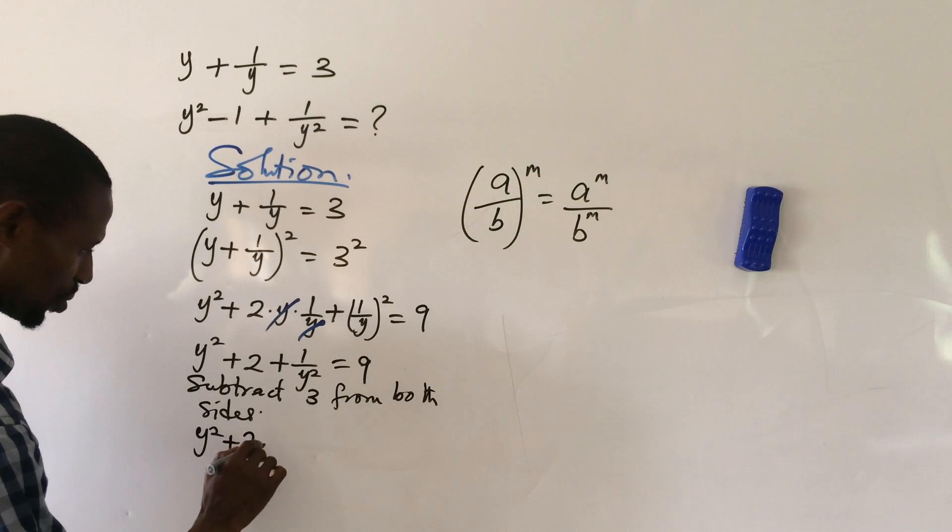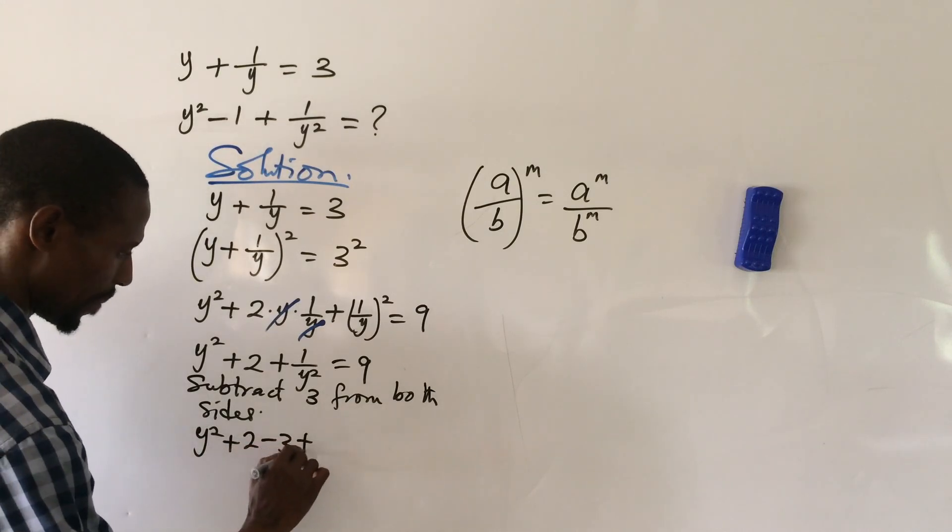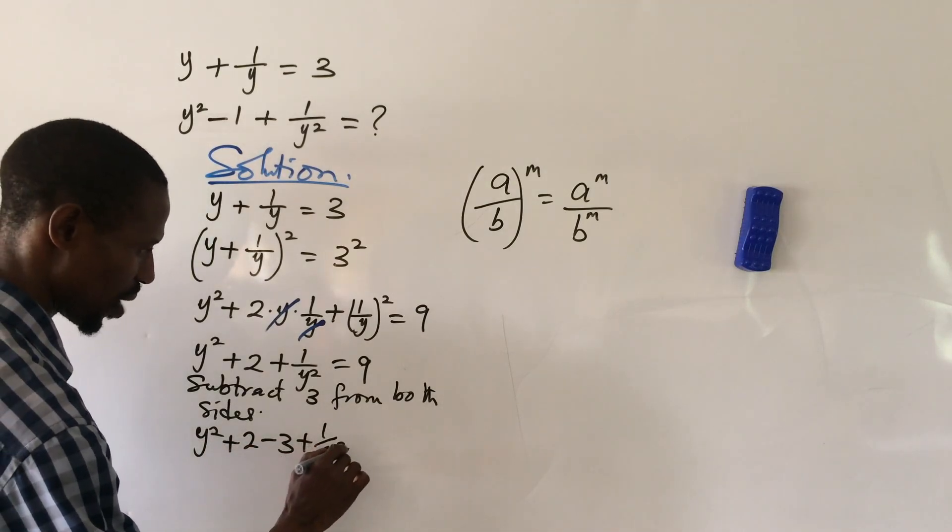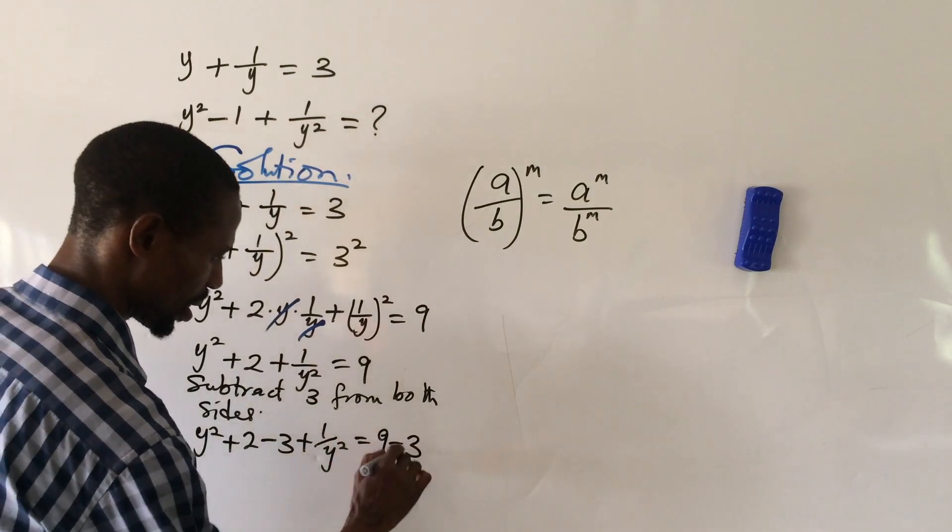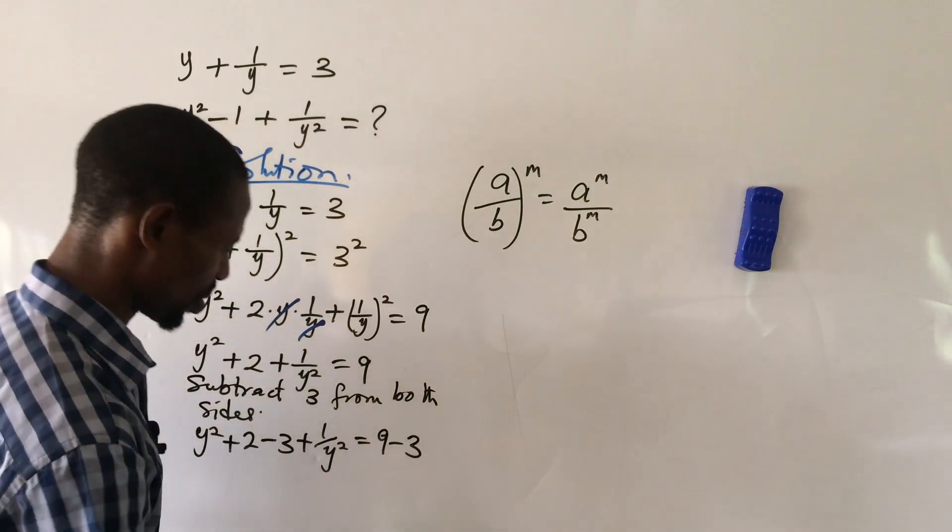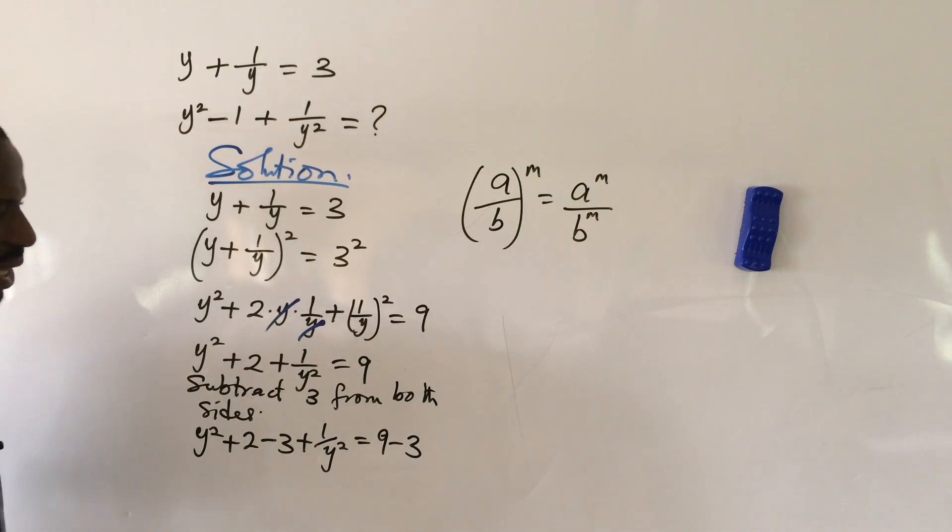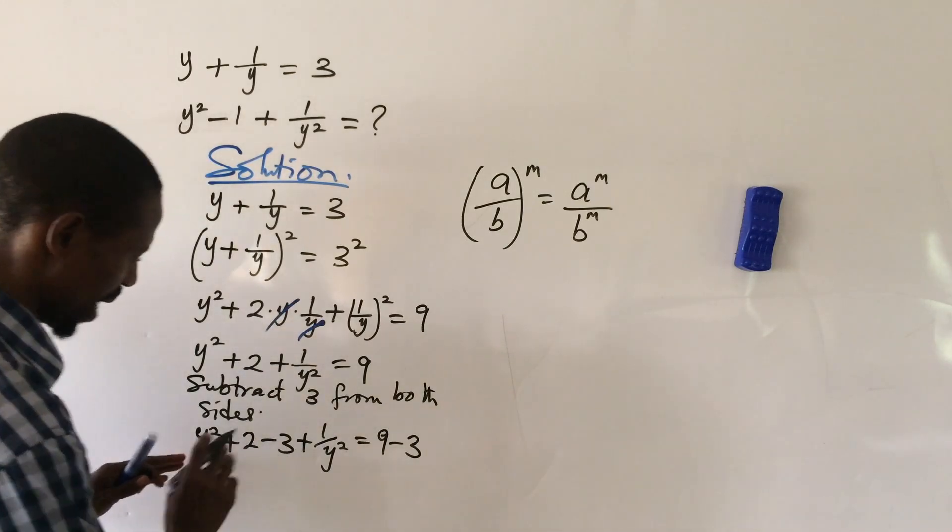Whatever we do to the right hand side, we must do the same to the left hand side. And so we end up having y squared minus 1 plus 1 over y squared equals 6.